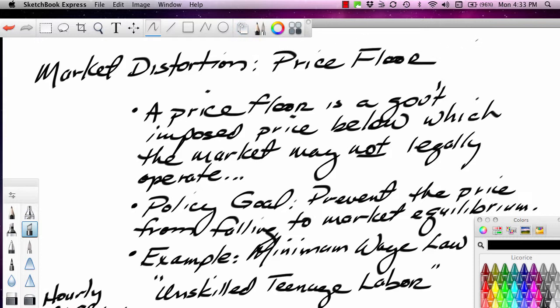A price floor is just an example of a case where government policy has distorted market outcomes. We know that when a freely operating market operates, it tries to move towards equilibrium.